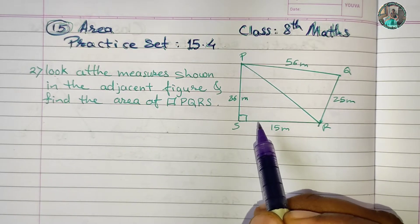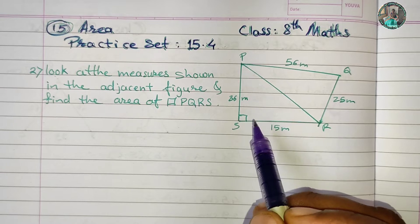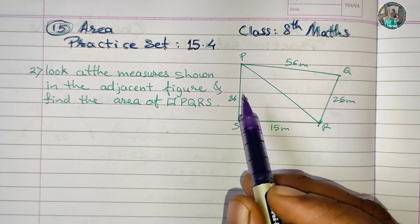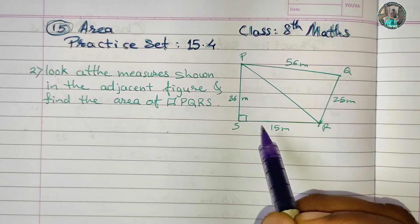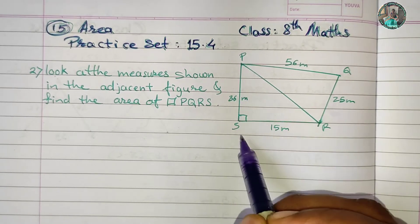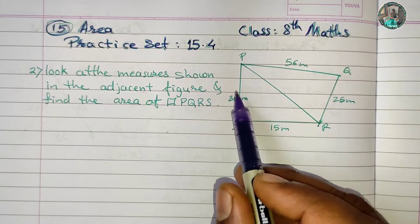This is a right angle triangle. In the triangle, we have to find the formula for the area. It is one-half into height into base.